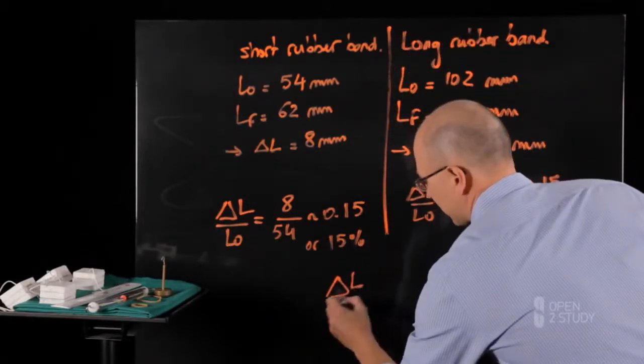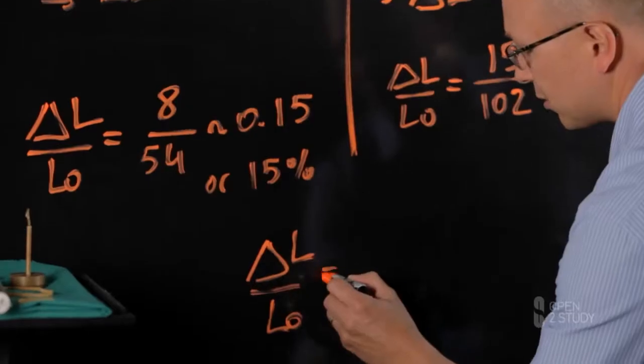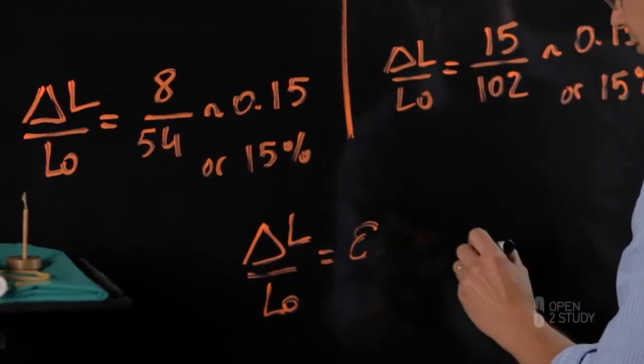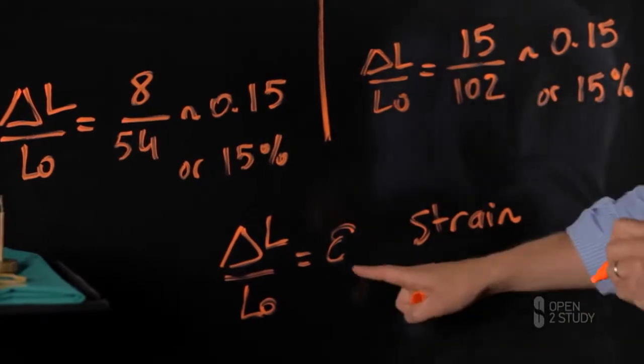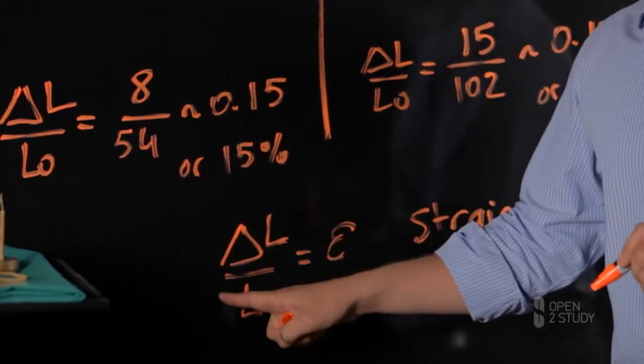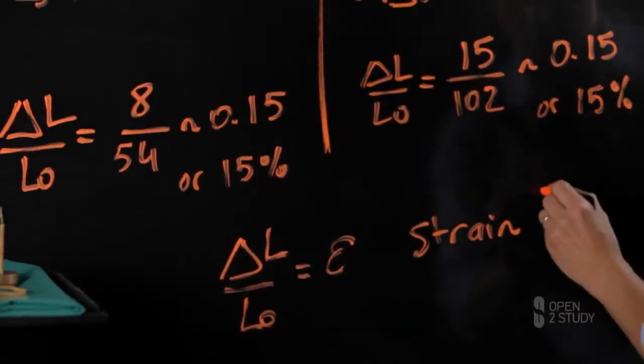This parameter, delta L over L0, is noted epsilon, usually in mechanics. And this is a strain. Epsilon is a length over a length and hence has no unit.